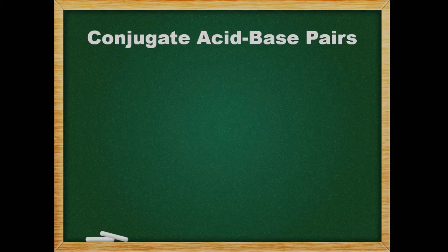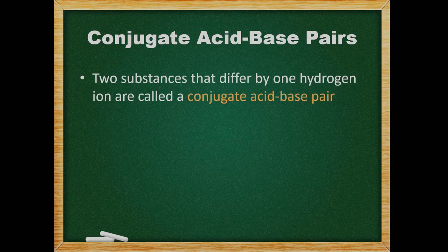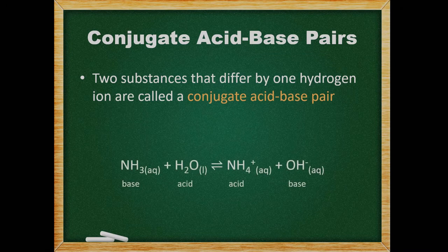When two substances differ by one hydrogen ion, they are called a conjugate pair. In this example, both the forward and reverse reactions occur. The water is acting as an acid since it is donating a proton. The ammonia is a base because it is accepting the proton from the water. Likewise, the ammonium is an acid and the hydroxide is a base, based on whether they are accepting or donating a proton.